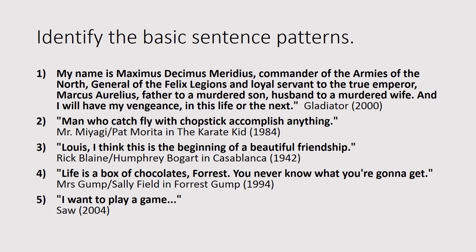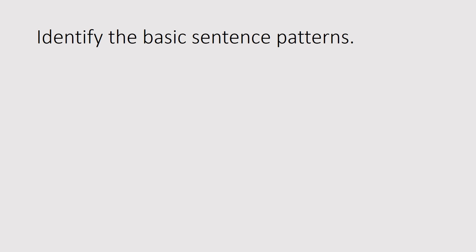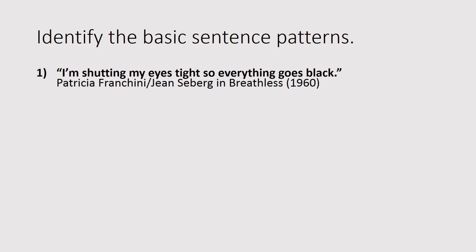From Saw: 'I want to play a game.' 'I' is the subject, 'want' is the transitive verb. Want what? 'To play a game' — your DO. S-T-V-D-O as well. Last one: 'I'm shutting my eyes tight so everything goes black.' 'I' is the subject, 'am shutting' is the predicate. Shutting what? 'My eyes' — your DO. And 'tight' complements 'eyes' — therefore S-T-V-D-O-O-C.